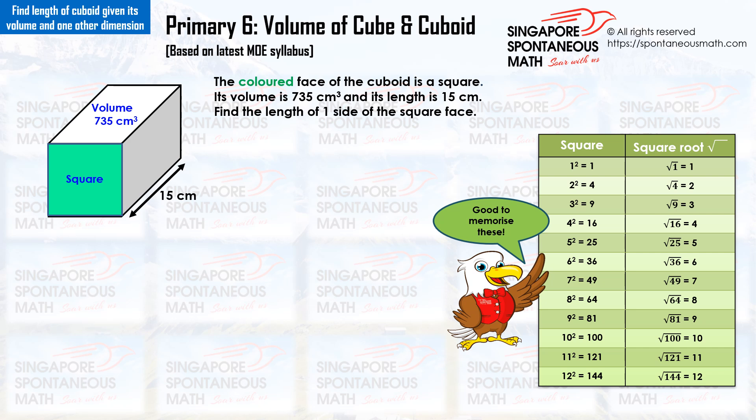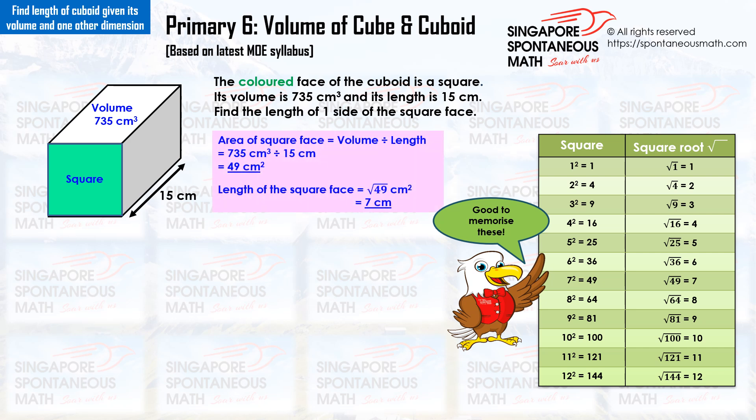The colored face of the cuboid is a square. Its volume is 735 cm³ and its length is 15 cm. Find the length of one side of the square face. Area of square face equals volume divided by length: 735 divided by 15 equals 49. The length of the square face is the square root of 49, which is 7. The length of the square face is 7 cm.